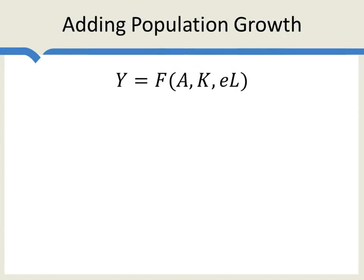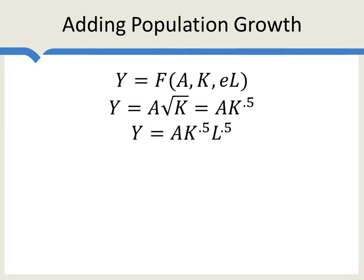Let's add population growth to the model. So we wrote our production function in very general terms, and then simplified it to output equal to A times the square root of K, which we can also write as A times K to the 0.5 or one half. When we do that, a natural way to generalize this is to add in labor with the same format. The 0.5 was nothing special — it was just an easy square root to work with. Let's generalize this to output equal to A times K to the alpha times L to the one minus alpha.